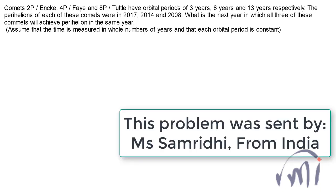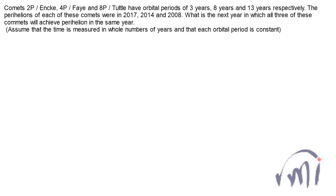Hi, so here we have a problem which was sent by Samrithi from India. In this problem we have three comets: 2P/Encke, 4P/Faye, and 8P/Tuttle. They have orbital periods of 3 years, 8 years, and 13 years respectively.